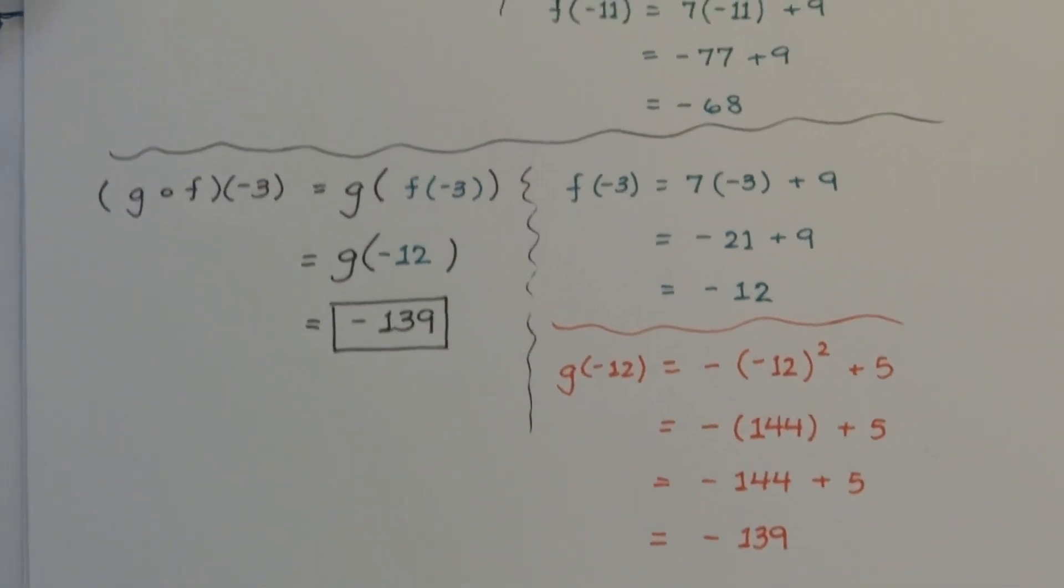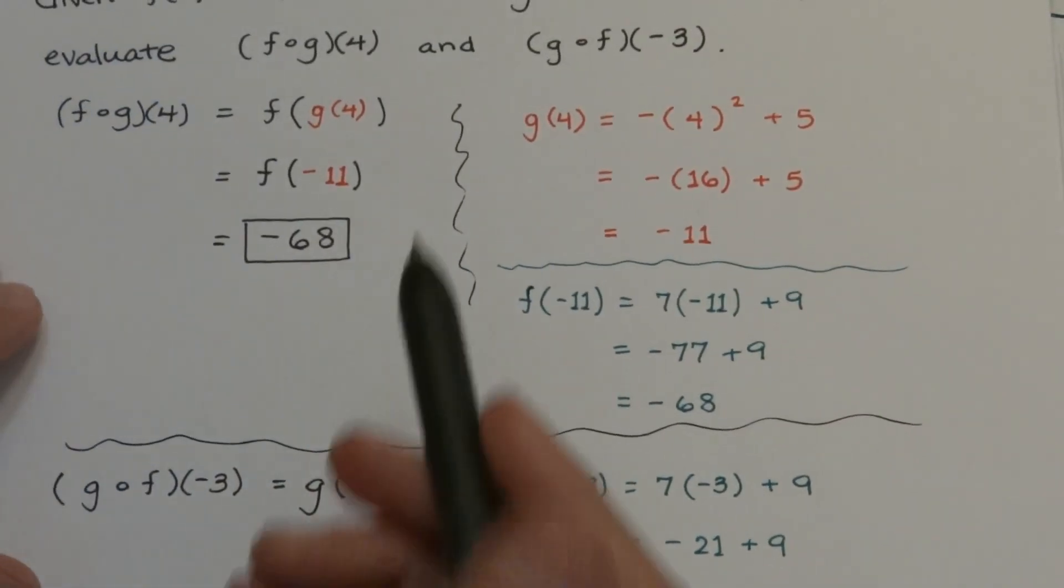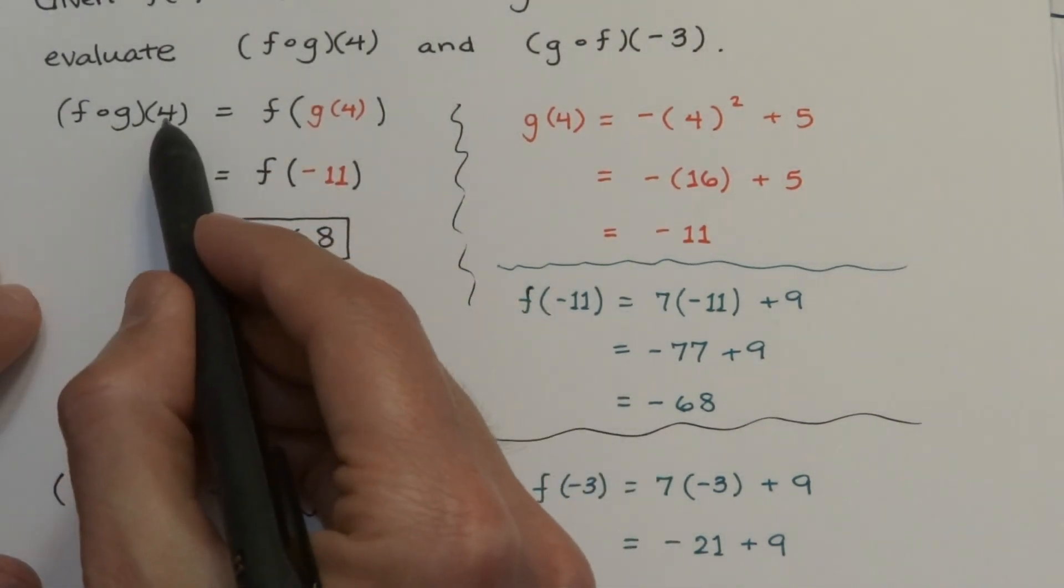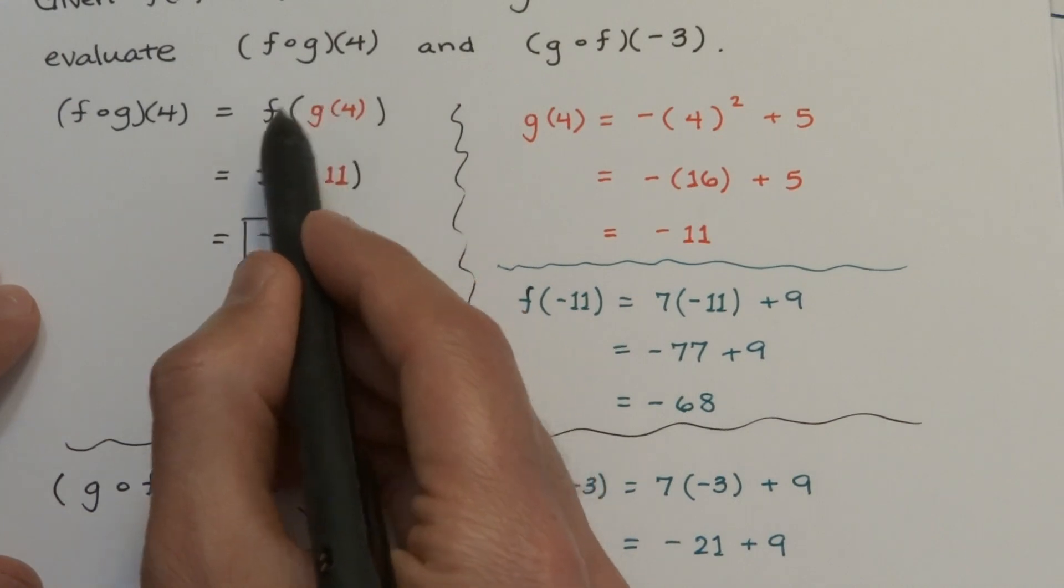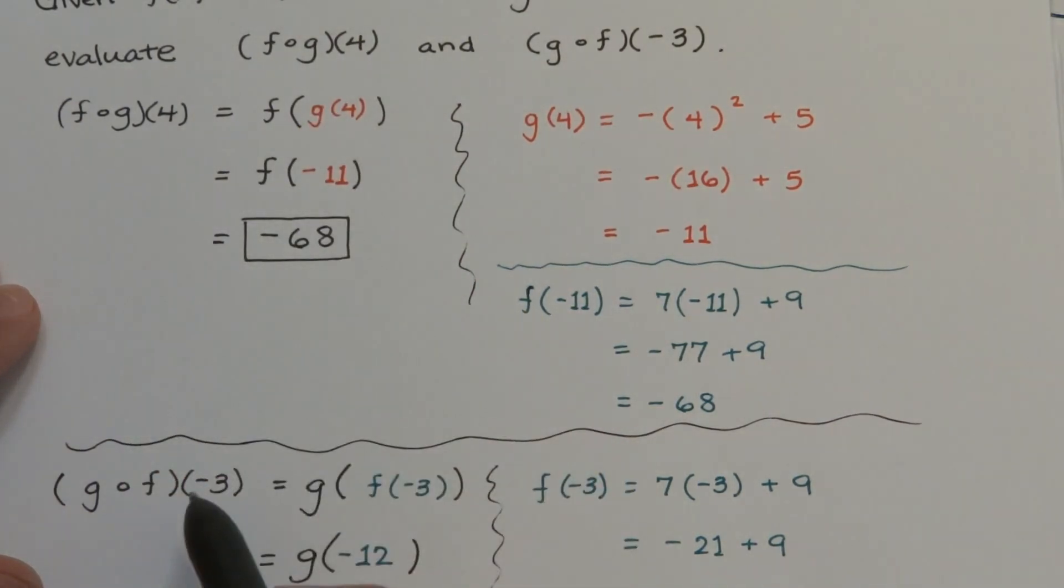In the previous part of the problem, f of g of 4 meant that 4 gets plugged into g first, and once you evaluate that, then you can evaluate f at that value, negative 11.